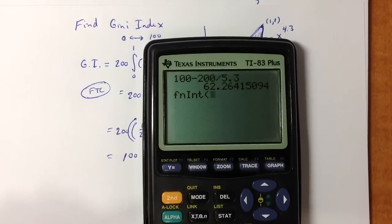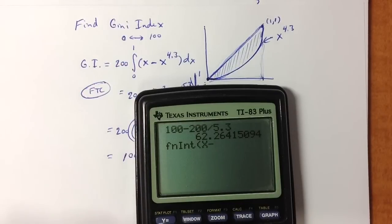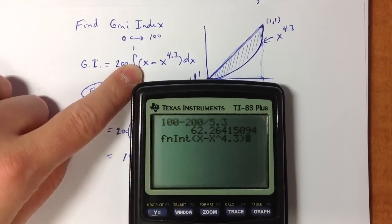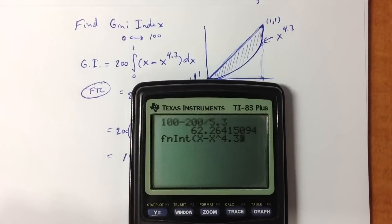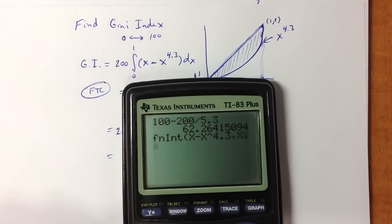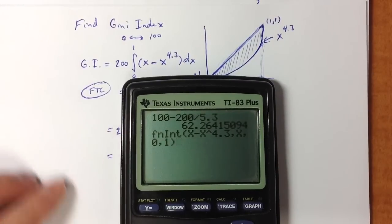Then we want to enter the integrand first. So I want to enter in x minus x raised to the 4.3 power, the original integrand expression, not the antiderivative. That parenthesis was a little premature. Then a comma and an x to identify the variable. Another comma, the lower limit. Another comma, and the upper limit.